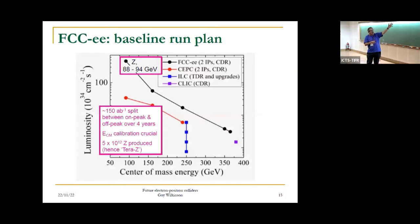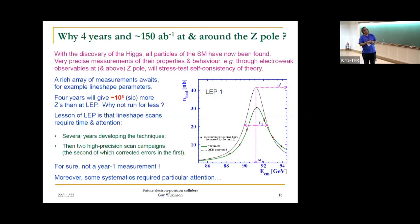Taking energy points one by one, let's start at the Z. The idea here would be to take over four years 150 inverse attobarn. That corresponds to 5×10^12 Z, something like 10^5 above that achieved at LEP. It's enormous. This project is sometimes called Tera Z.